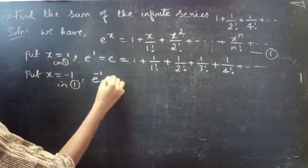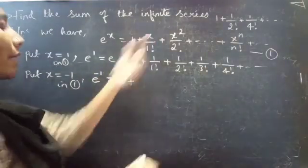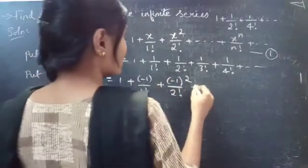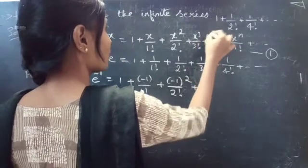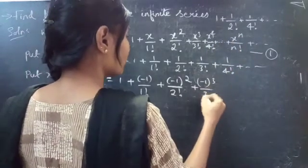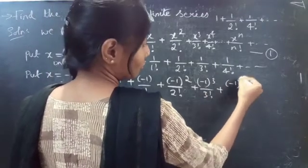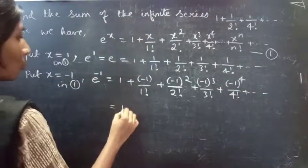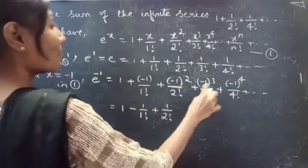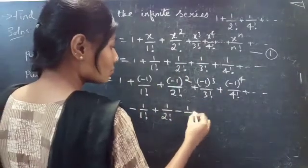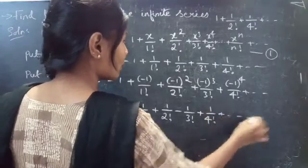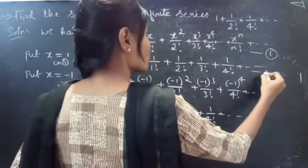Then we get e power minus 1 equals 1 plus minus 1 by 1 factorial plus minus 1 whole squared by 2 factorial plus x cubed by 3 factorial plus x power 4 by 4 factorial and so on. So we get 1 minus 1 by 1 factorial plus 1 by 2 factorial minus 1 by 3 factorial plus 1 by 4 factorial and plus so on. Consider this as equation 2 and the previous as equation 3.